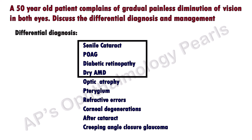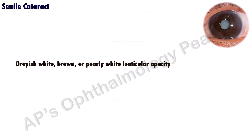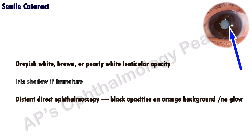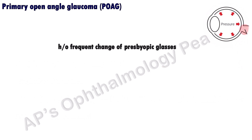In a senile cataract, there will be a grayish white, brown, or dense white lenticular opacity. If the cataract is immature, an iris shadow will be seen on distant direct ophthalmoscopy. Black opacities are seen against an orange background in an immature cataract, and no glow is seen in a mature or hypermature cataract. The intraocular pressure and fundus are normal.